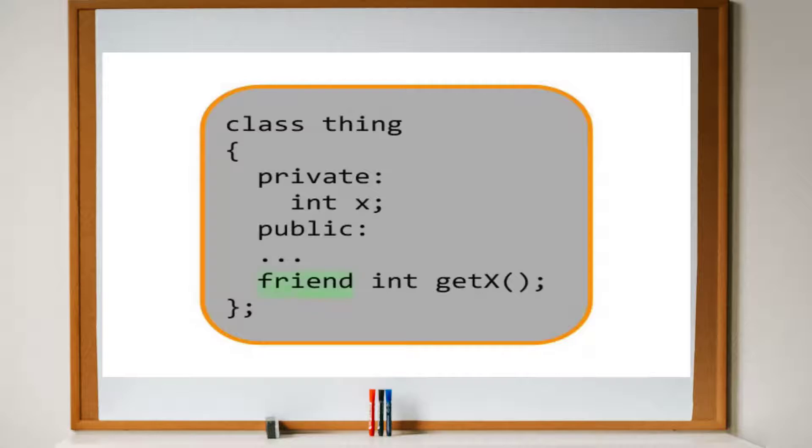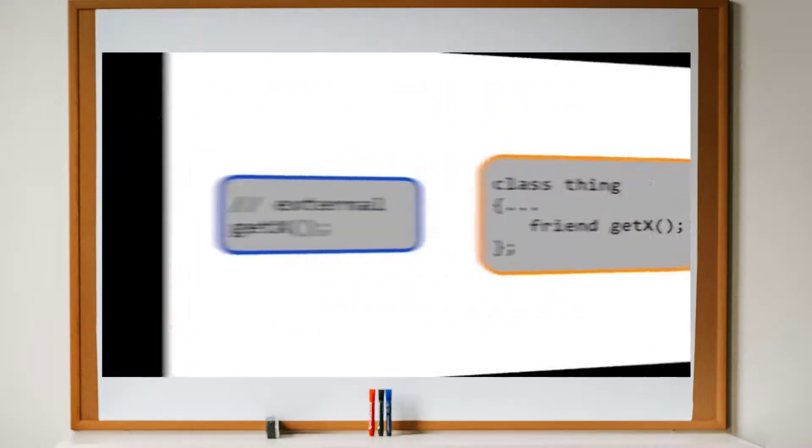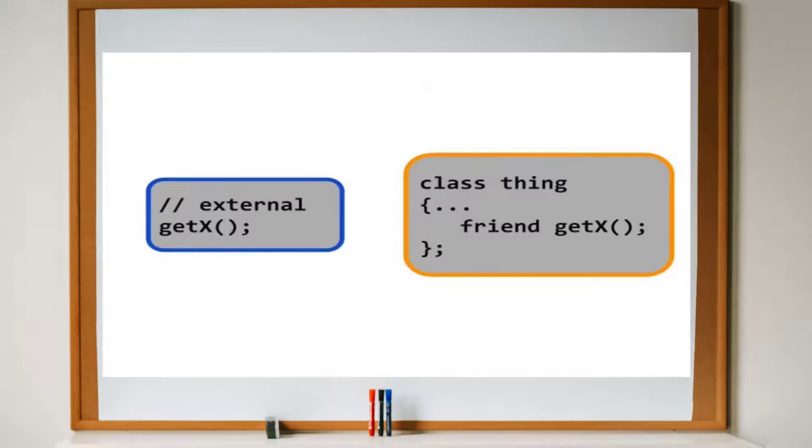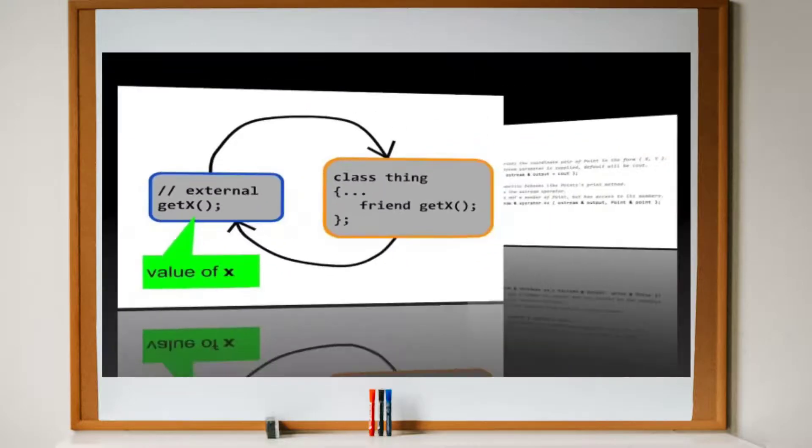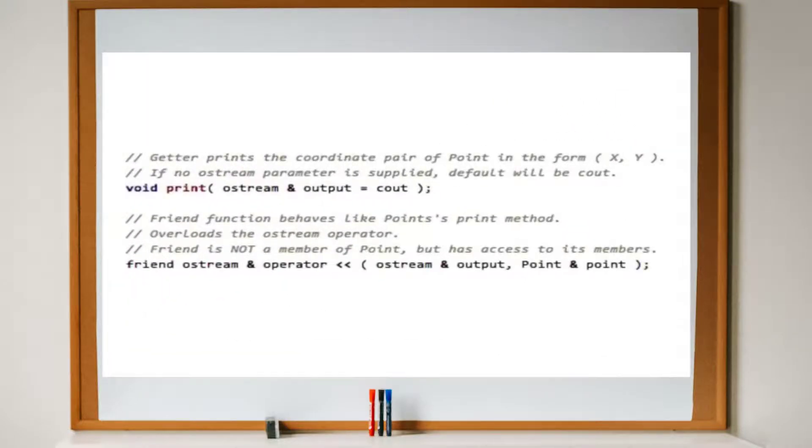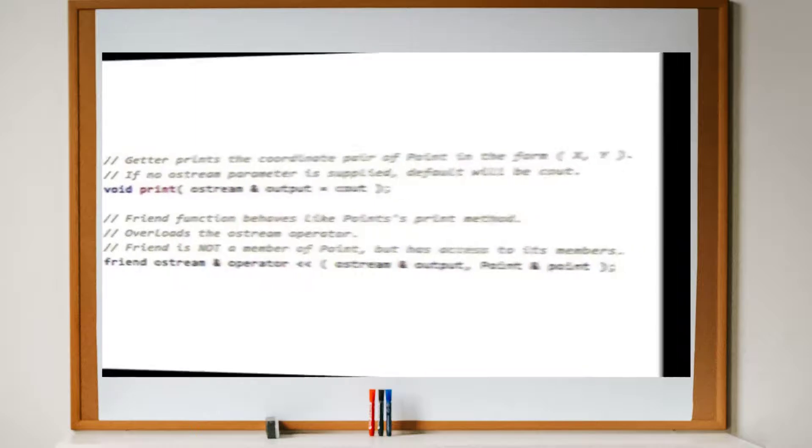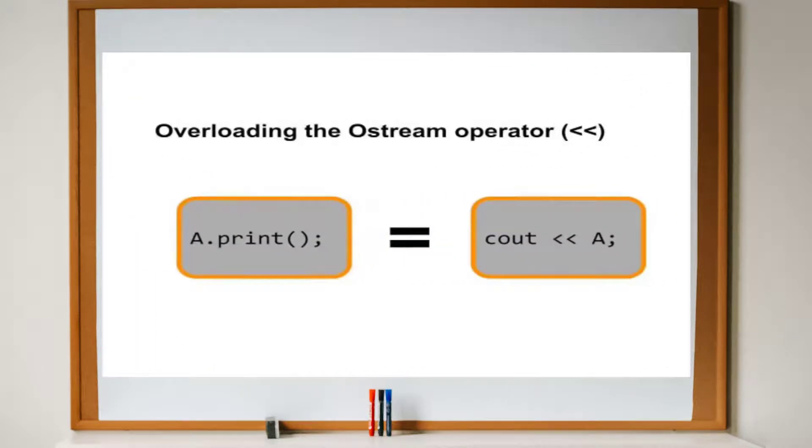Sometimes, a friend function is included in the method declarations of a class. The friend function is not a true member of the class. Instead, it is the signature of a function that is external to the class. The keyword friend lets the function have access to the private data members of the class. Friend functions are commonly used for overwriting the iostream operators so that you can print the contents of an object using the double angle brackets.